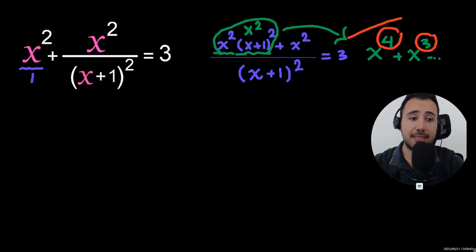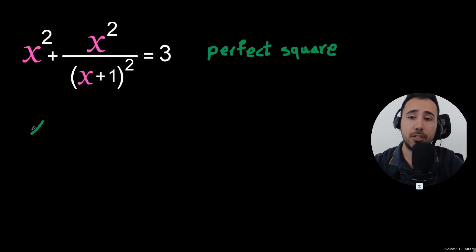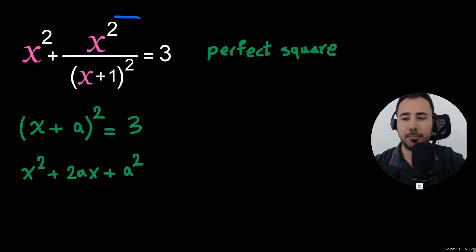So instead, we could think of something else. We could write the left-hand side as a perfect square, if it is possible. That means this, the second term over here, this one, should be the same and equal to this one.